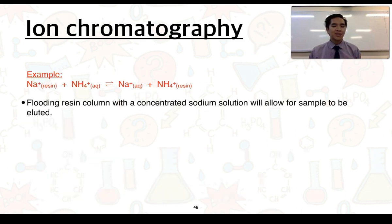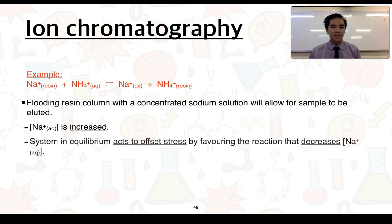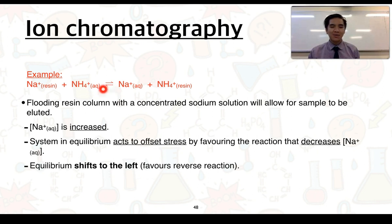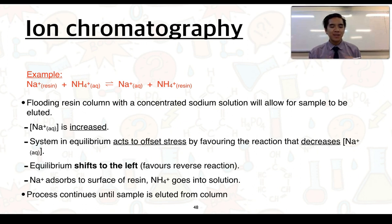We can look at the opposite scenario. If we were to flood the resin column with a concentrated sodium solution, which would be our mobile phase, this will allow the sample to be eluted and removed from the column. This is because the concentration of sodium ions is going to be very high. Using Le Chatelier's Principle, the system in equilibrium will act to offset the stress by favouring the reaction that will decrease the concentration of sodium ions in solution. So it is going to favour the reverse reaction, equilibrium shifts to the left. As a result, more sodium ions adsorb to the surface of the resin, and the ammonium ions which were adsorbed go back into solution. This process continues until the sample is eluted from the column.